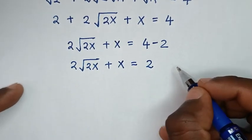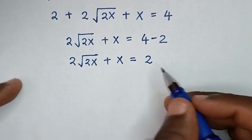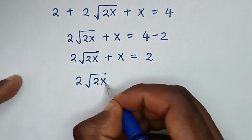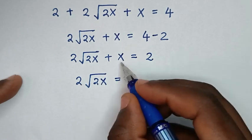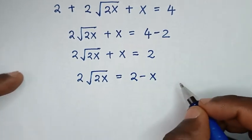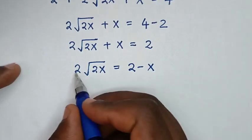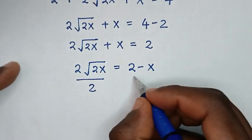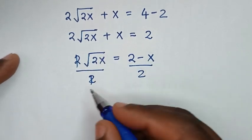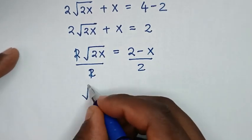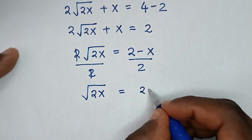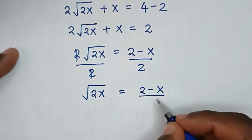In the next step we take x to the other side: 2√(2x) = 2 - x. Then divide both sides by 2: √(2x) = (2 - x) / 2.